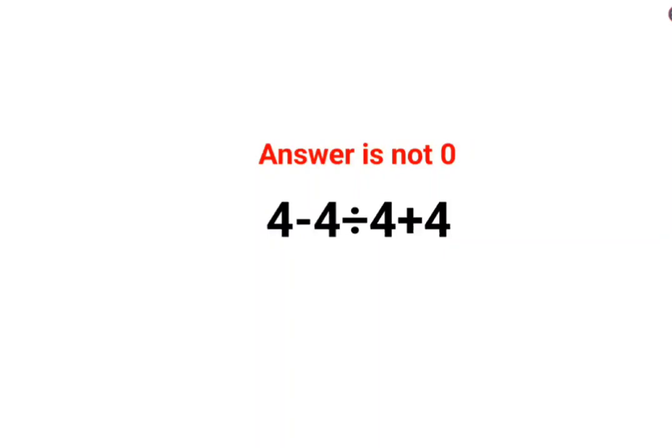Welcome everyone. So yes, a lot of people thought that the answer for this question is supposed to be 0 because 4 minus 4 is 0 divided by 4 plus 4 which is 8. So here the answer comes out to be 0 divided by anything is supposed to be 0.